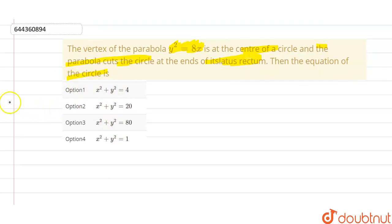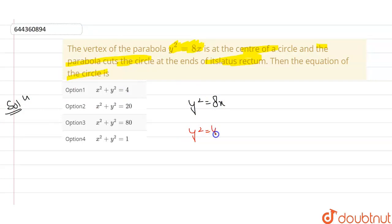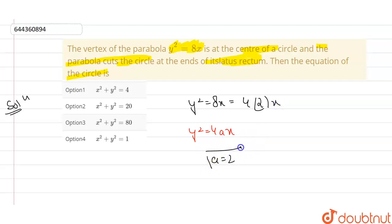So the equation for the parabola given is y² = 8x. We know the general equation of a parabola is y² = 4ax. Comparing these two equations, I can write 8x as 4 × 2 × x, so the value of a is 2.